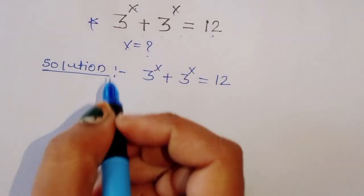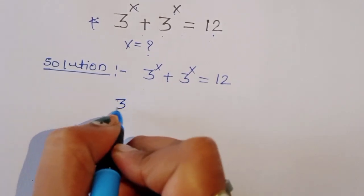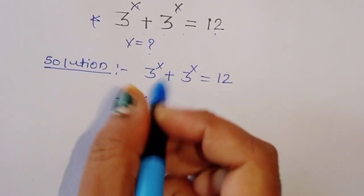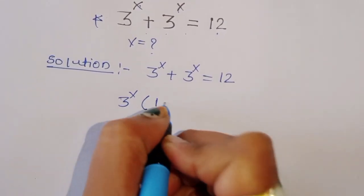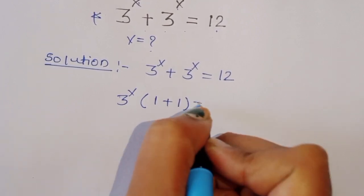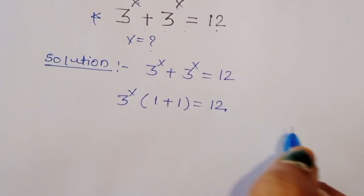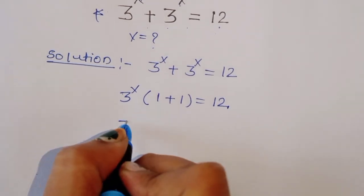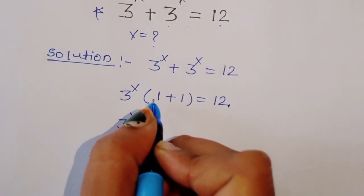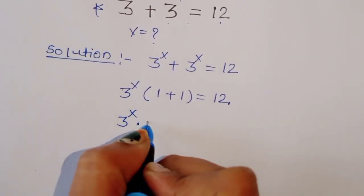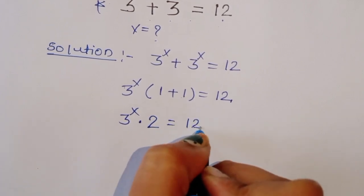We can do one thing here — take 3 power x as common. So it will come: 3 power x times 1 plus 1 is equal to 12. That is, 3 power x times 2 is equal to 12.